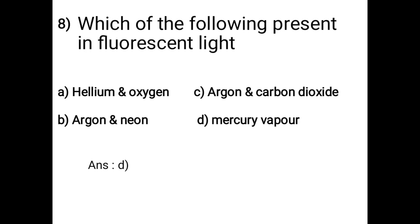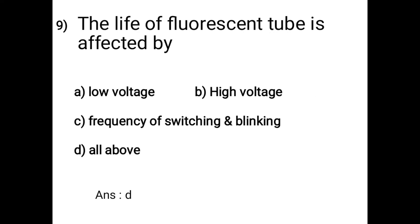Question 8: Which of the following is present in fluorescent light? Options are: A - helium and oxygen, B - argon and neon, C - argon and carbon dioxide, D - mercury vapor. The answer is option D: mercury vapor is present in fluorescent light.